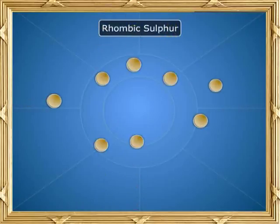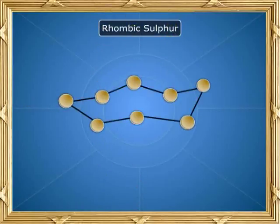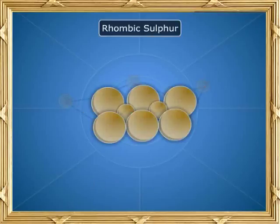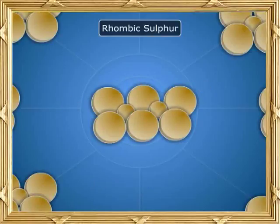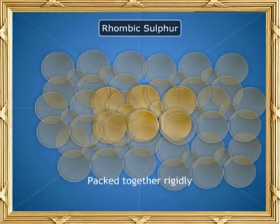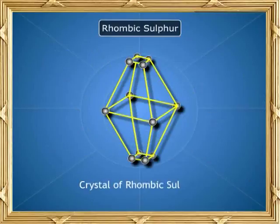Rhombic sulphur. Atoms in rhombic sulphur are arranged as an eight-membered ring. The rings are packed together rigidly to give the crystal of rhombic sulphur.